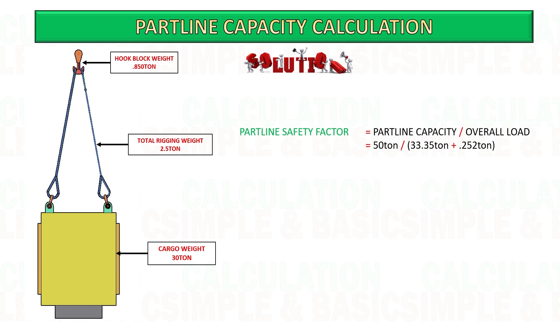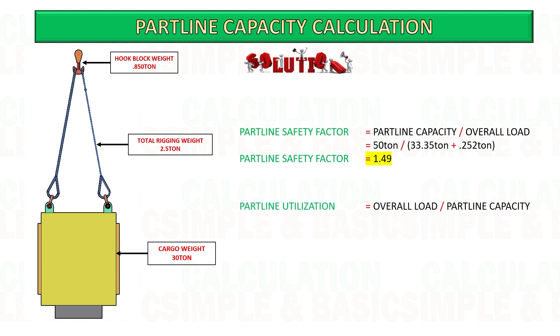Calculate the part line safety factor by dividing the part line capacity by the overall load. Next, calculate the utilization rate of the part line by dividing the overall load by the part line capacity.